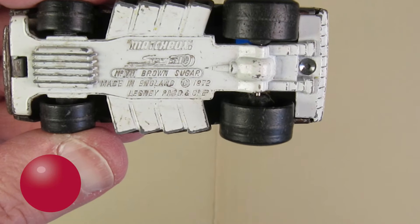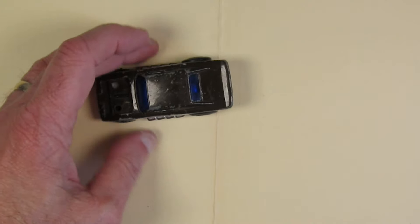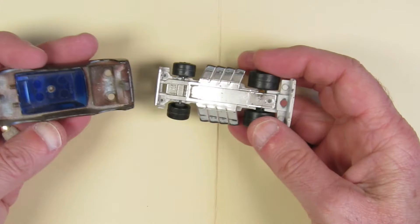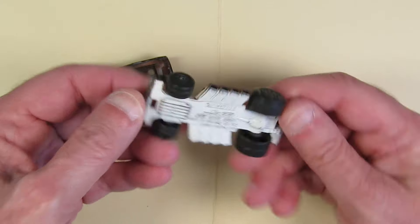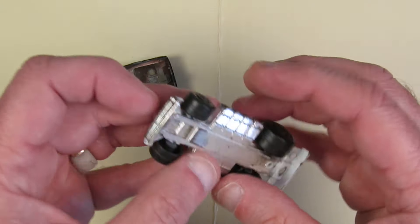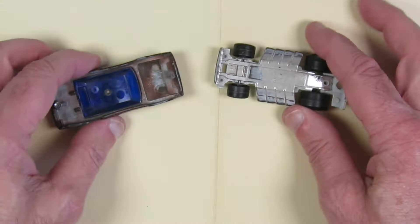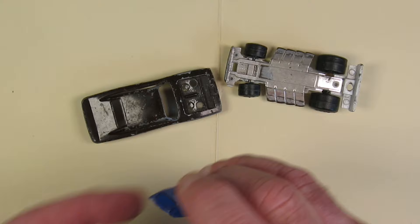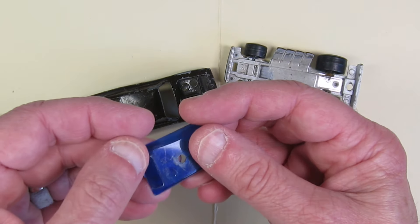This casting is a really interesting Matchbox release. It's the Brown Sugar. You see it has the Roman numeral VII on it from the limited edition Roman numerals group of 10 super fast models. Apparently it was released only in the U.S. and it's based upon the Dodge Charger.